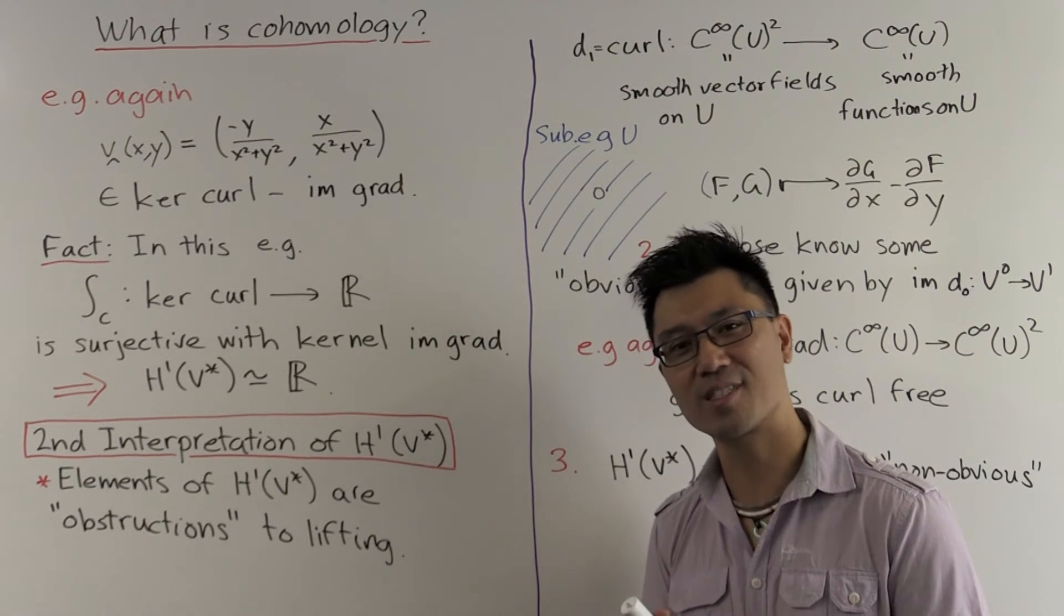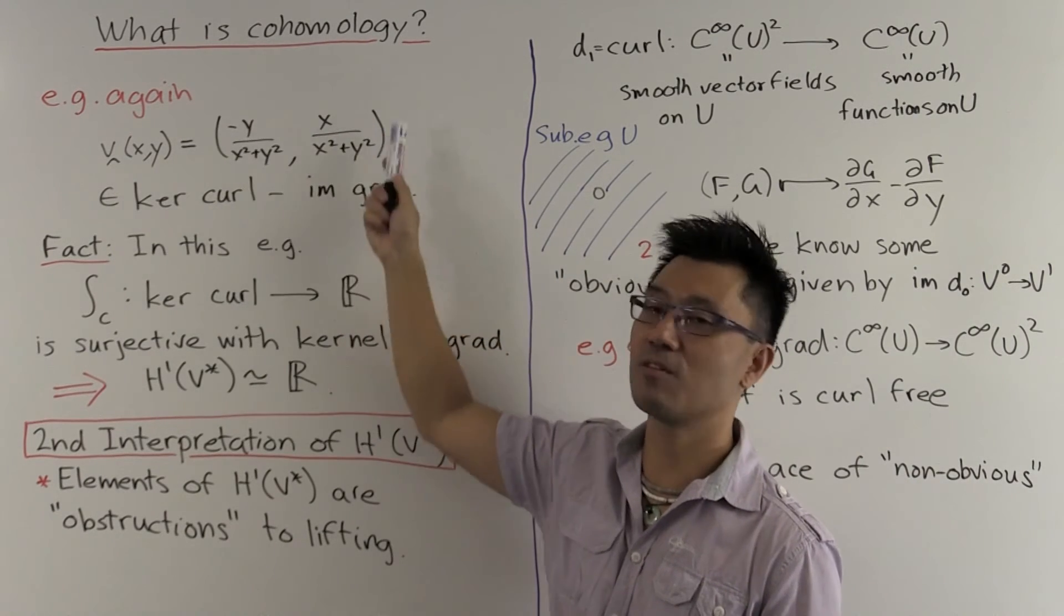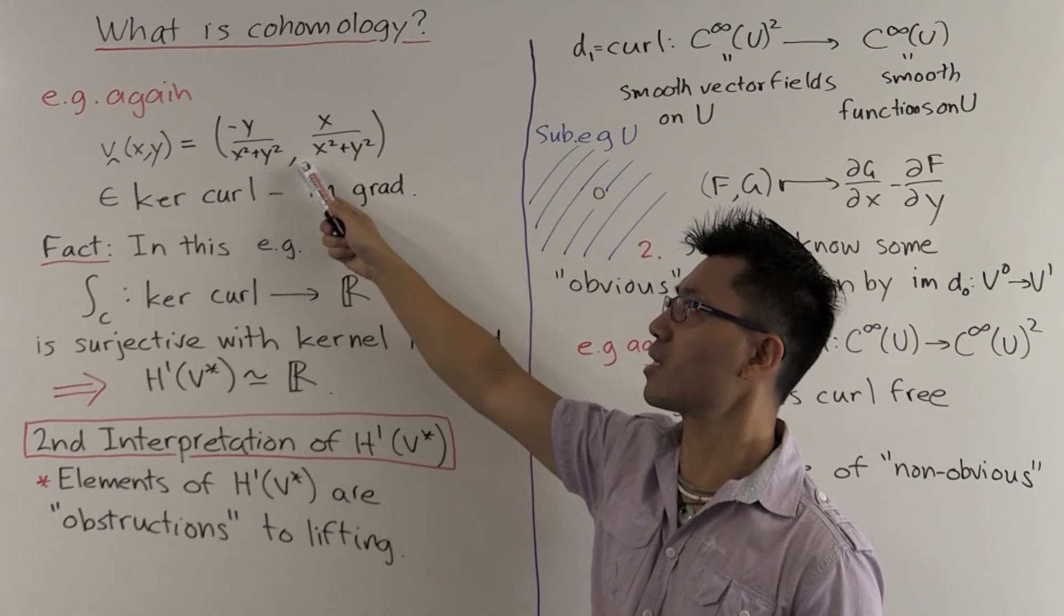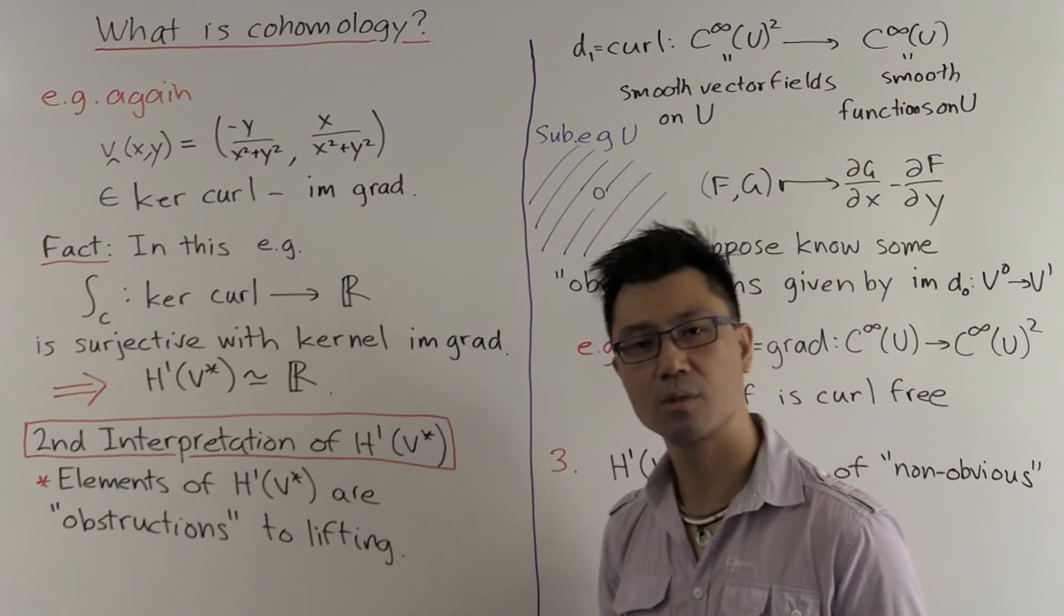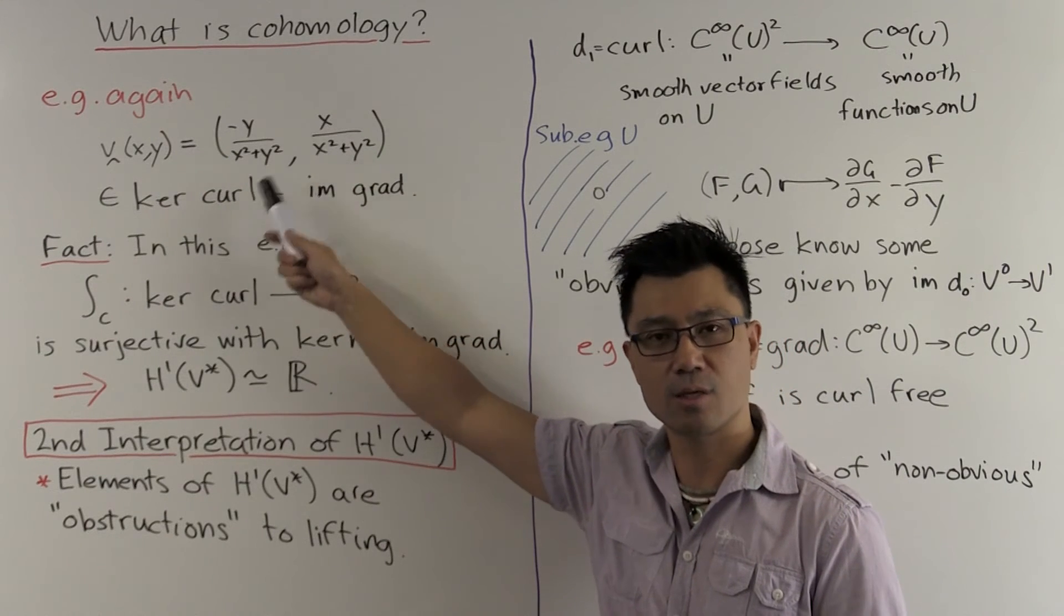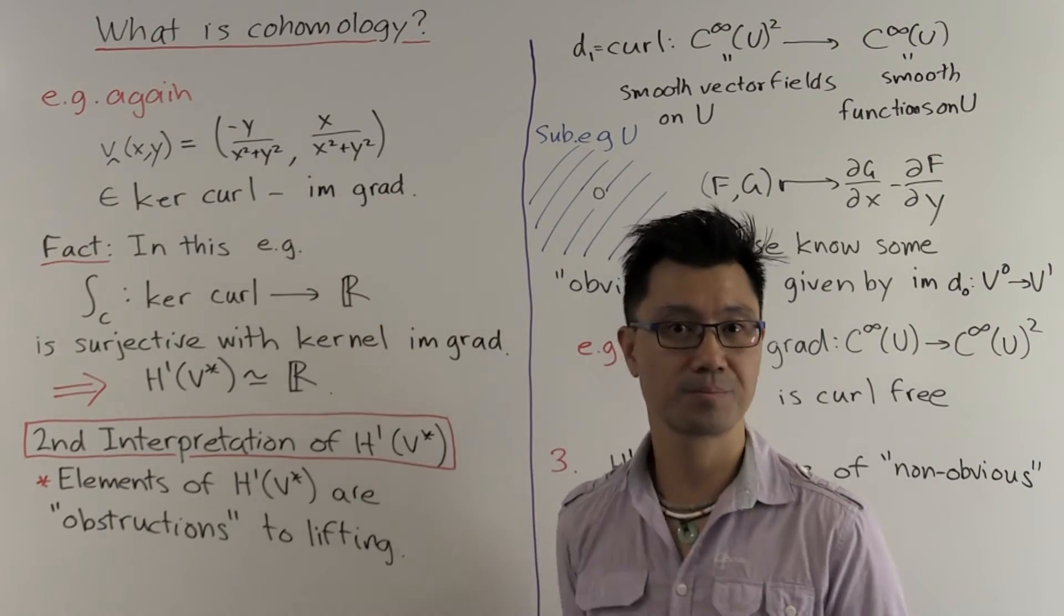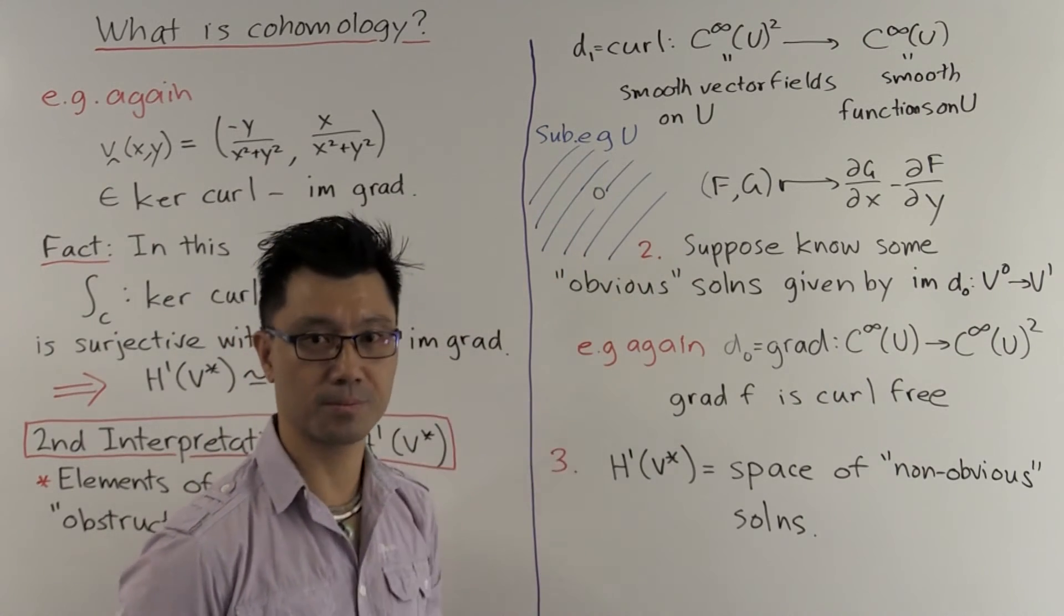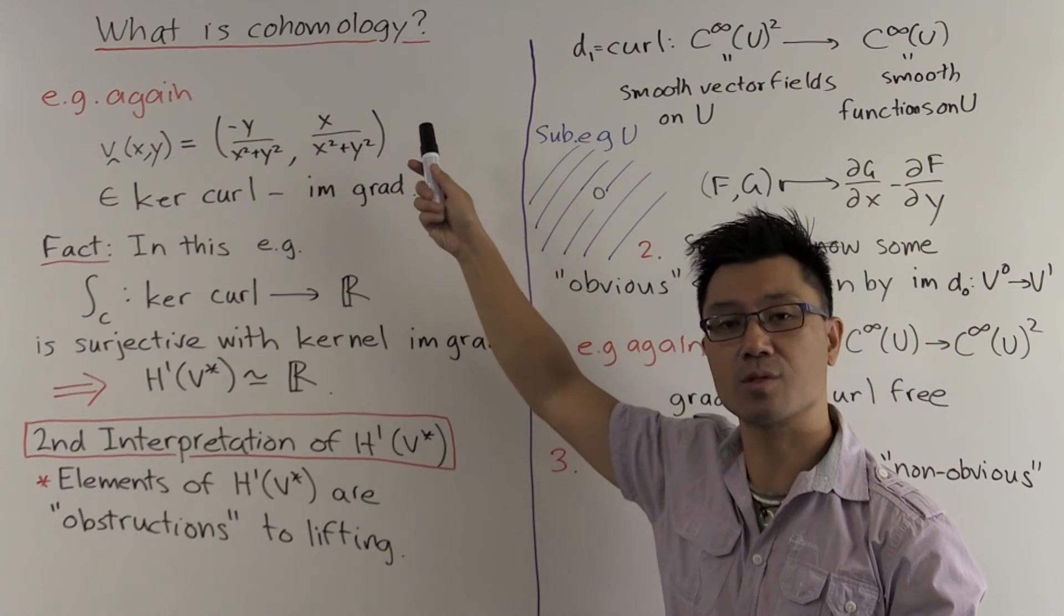So what's a non-obvious solution? In other words, a curl-free vector field, which is not the gradient of a scalar potential function. Well, hopefully you saw this in your multivariable calculus class. The classic example is this vector field here: minus y over x squared plus y squared as the x coordinate and x over x squared plus y squared as the y coordinate. So note, very importantly, that this is not defined at (0, 0). But it is smooth everywhere else. So it is defined on this open subset U.